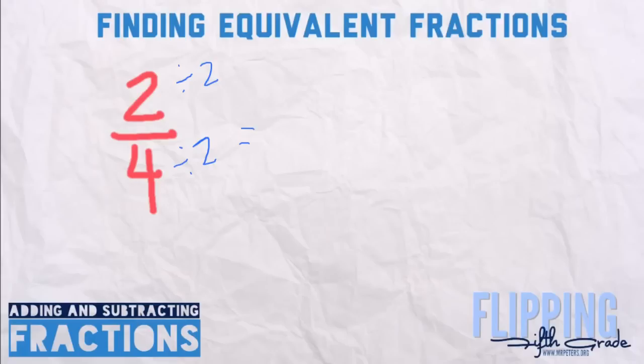Now since both of these have a common factor being two, you can divide. So two divided by two is one. Four divided by two is two. So we get one half. That only works if the numerator and the denominator share a common factor. If they do not, you cannot use this method. We're going to talk about this in the next lesson. But this is called simplifying a fraction.